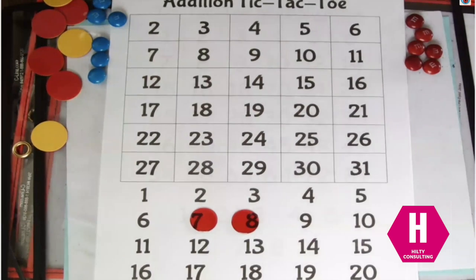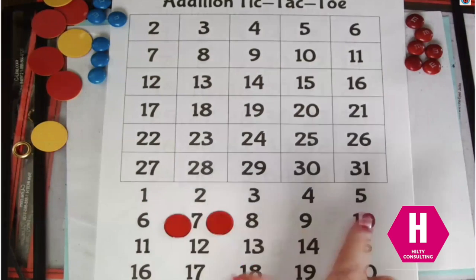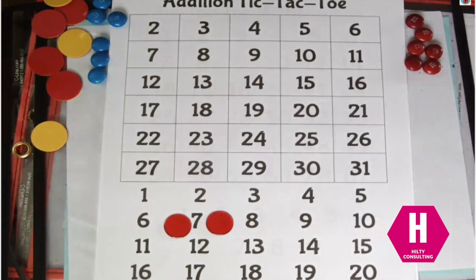So to play this game the person who goes first is going to use these two clear counters to cover over two parts or two addends down here at the bottom of our board.